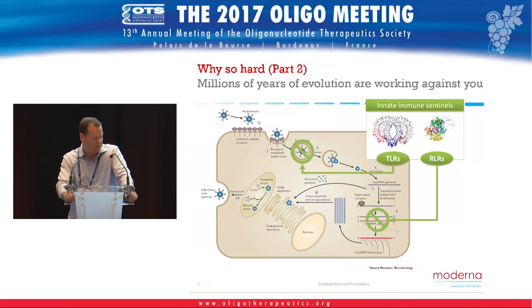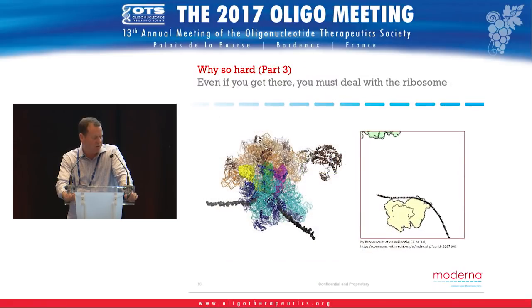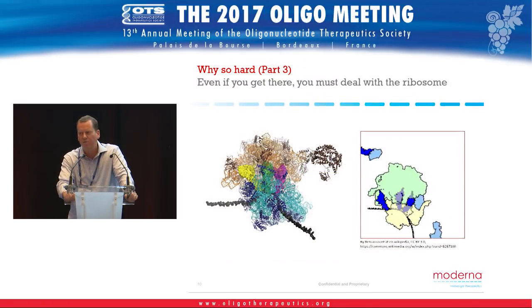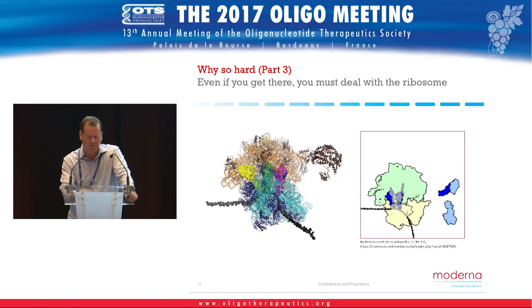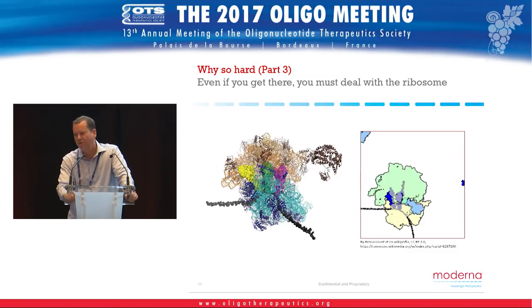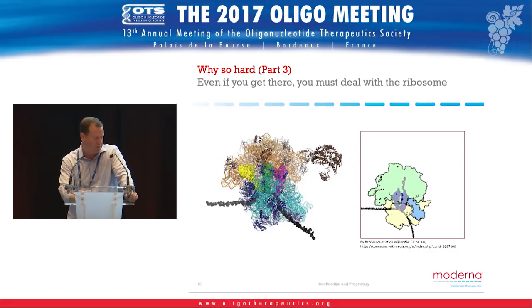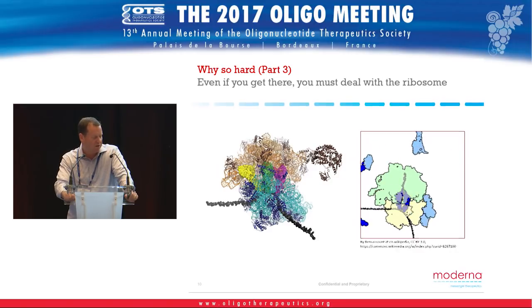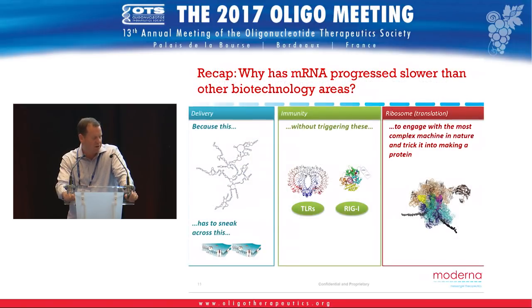And finally, if you're successful enough to solve delivery and innate immunity, you then have to deal with the ribosome — the most complex machine in nature — and effectively generate protein. Some of the tools you'd use to address the earlier challenges aren't always consistent with ribosomal processing. To recap: delivery, immunity, and engaging the ribosome are the ultimate reasons why messenger RNA has progressed slower than other biotechnology areas.